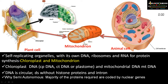They are called semi-autonomous because the majority of the proteins required for these organelles are coded by instructions within the nucleus. Very small amount of DNA is present in these organelles; still, the nucleus has a fair amount of DNA with instructions for synthesizing proteins required for these organelles. That is why these organelles are called semi-autonomous organelles.